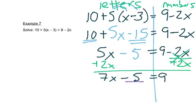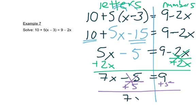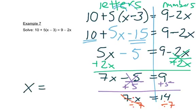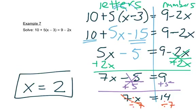This minus 5 is a number on the letter side, so I want to move it. Adding 5 to both sides gives me 7x equals 14. This is multiplication, so the opposite of multiplication is division — we'll divide by 7. That cancels out, leaving x on the left, and 14 divided by 7 is 2 on the right.